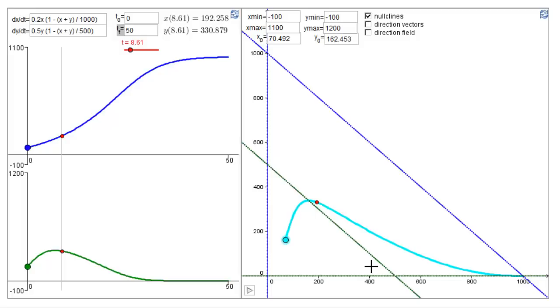Notice that along the B nullcline, or the green curve, dB/dt is zero. Since B is our vertical, or Y axis, dB/dt equals zero means there's no vertical movement. And notice that when the trajectory crosses the green curve, it is moving exactly horizontally.